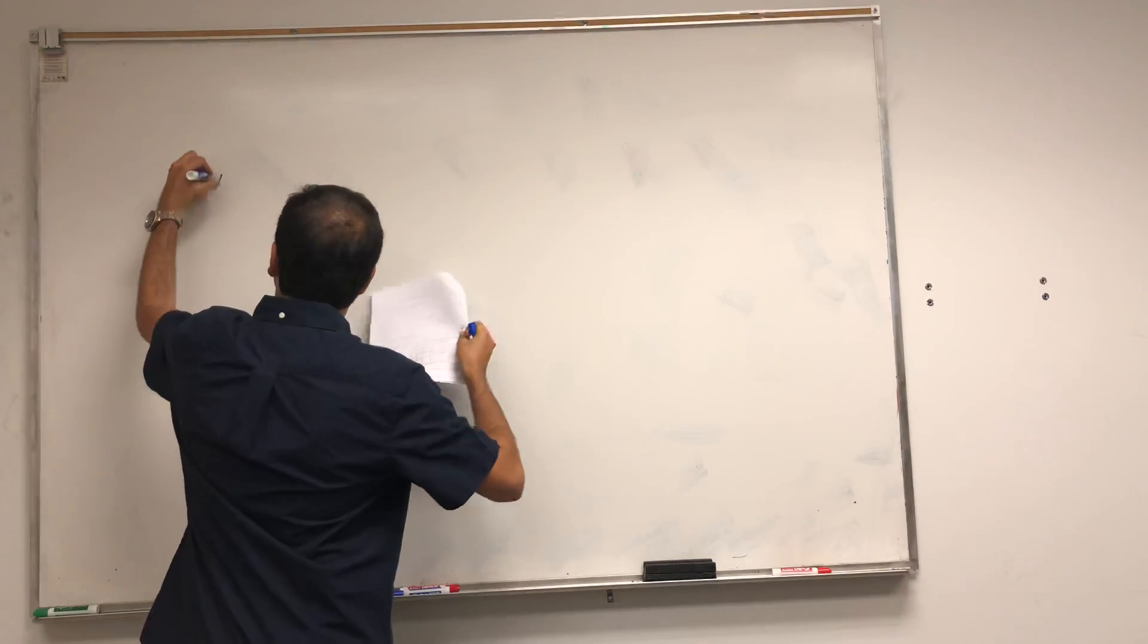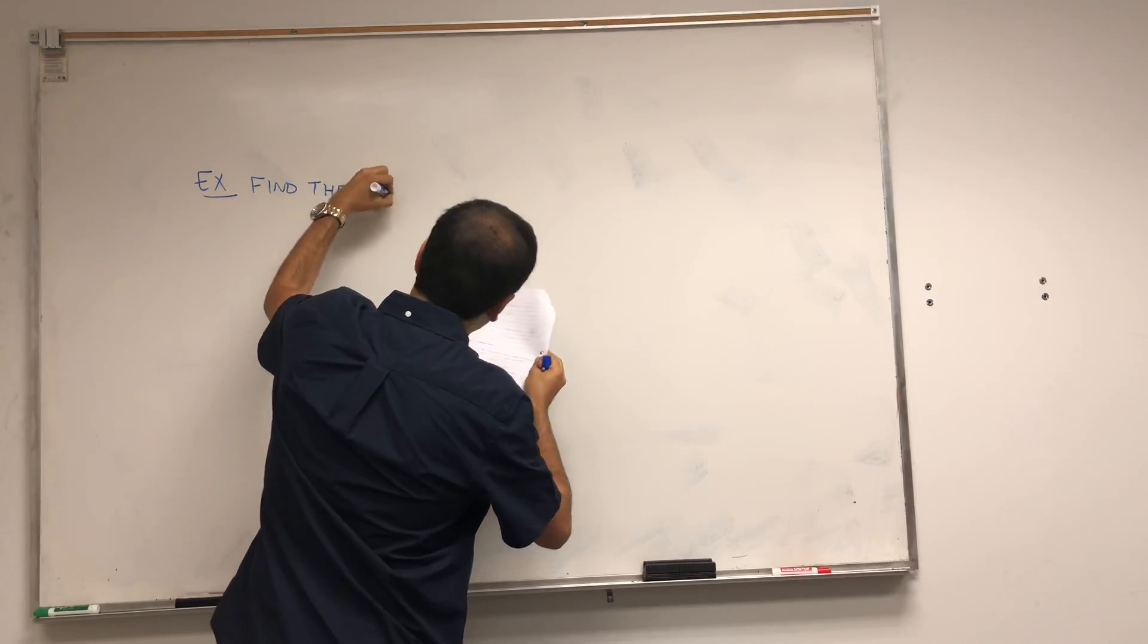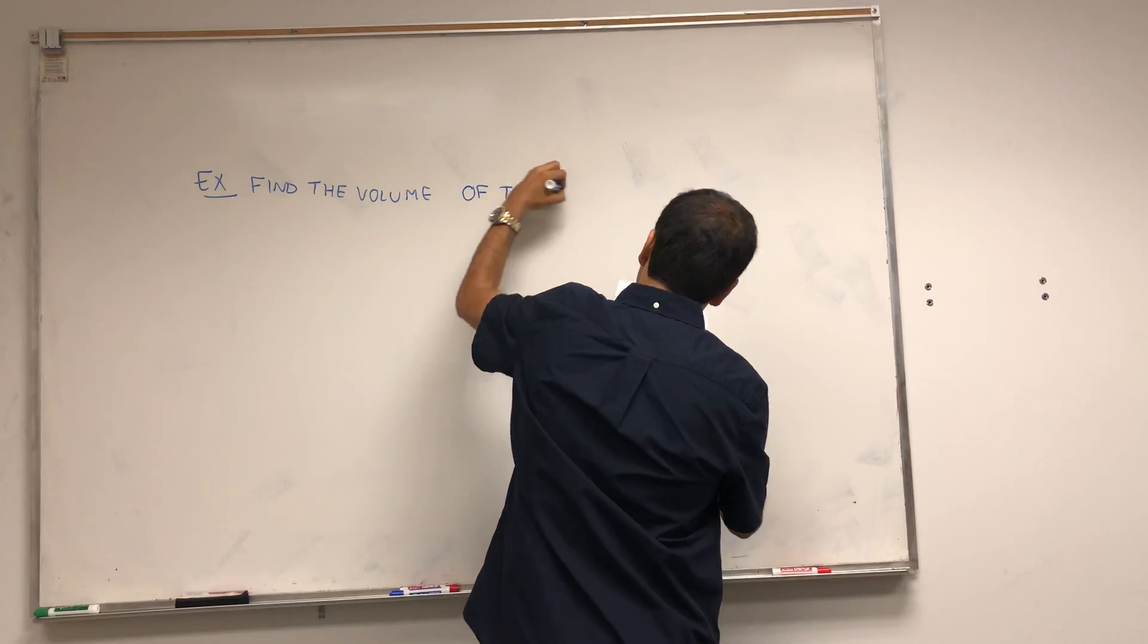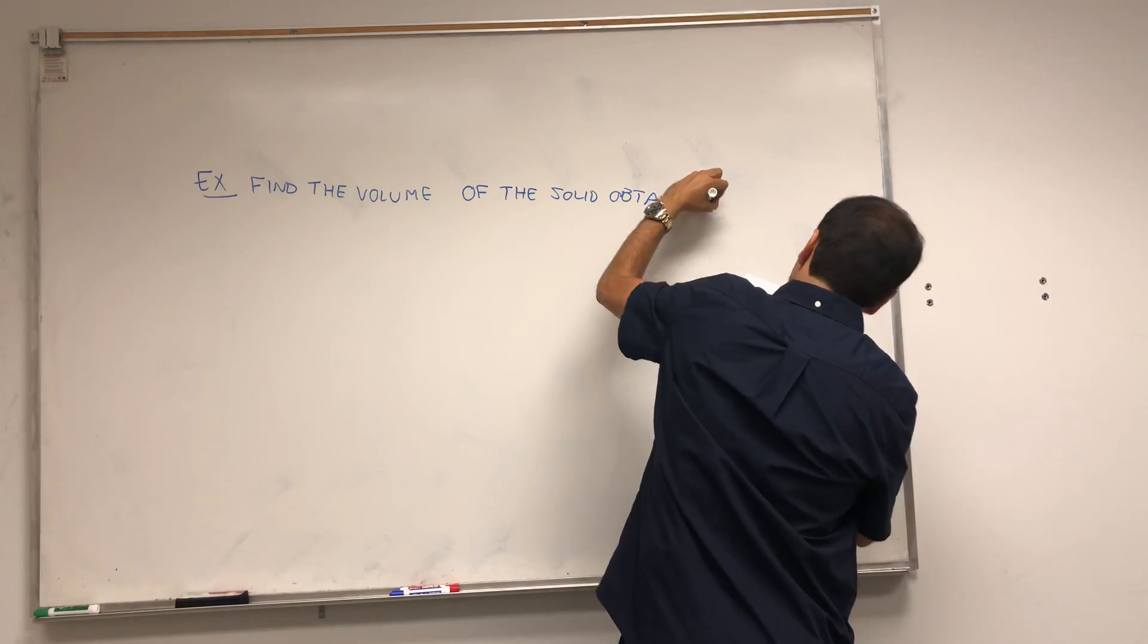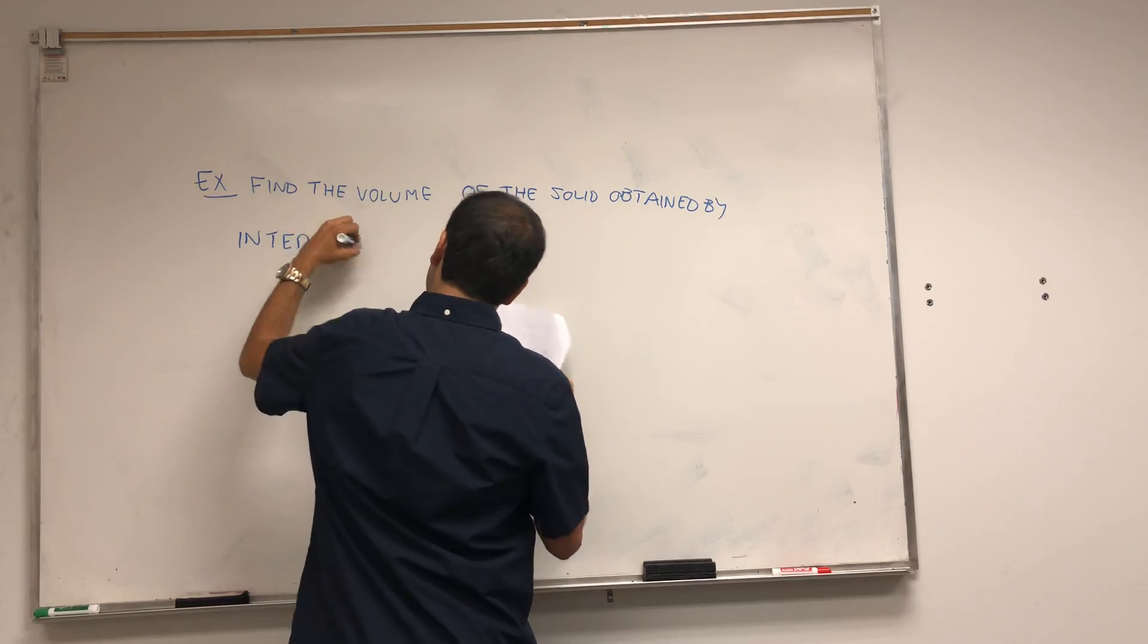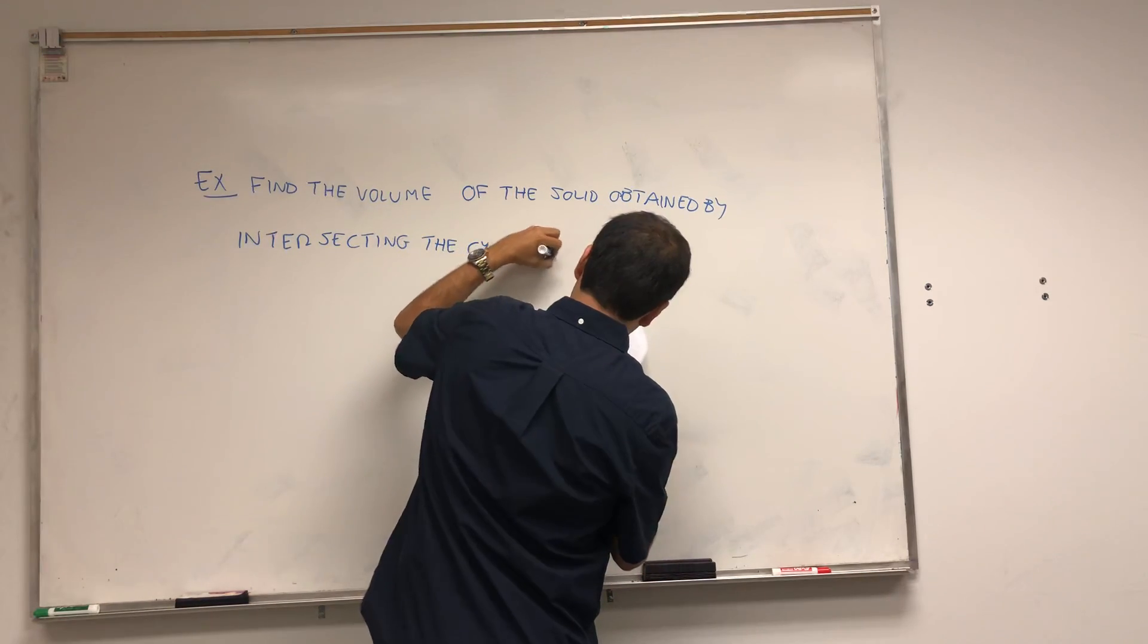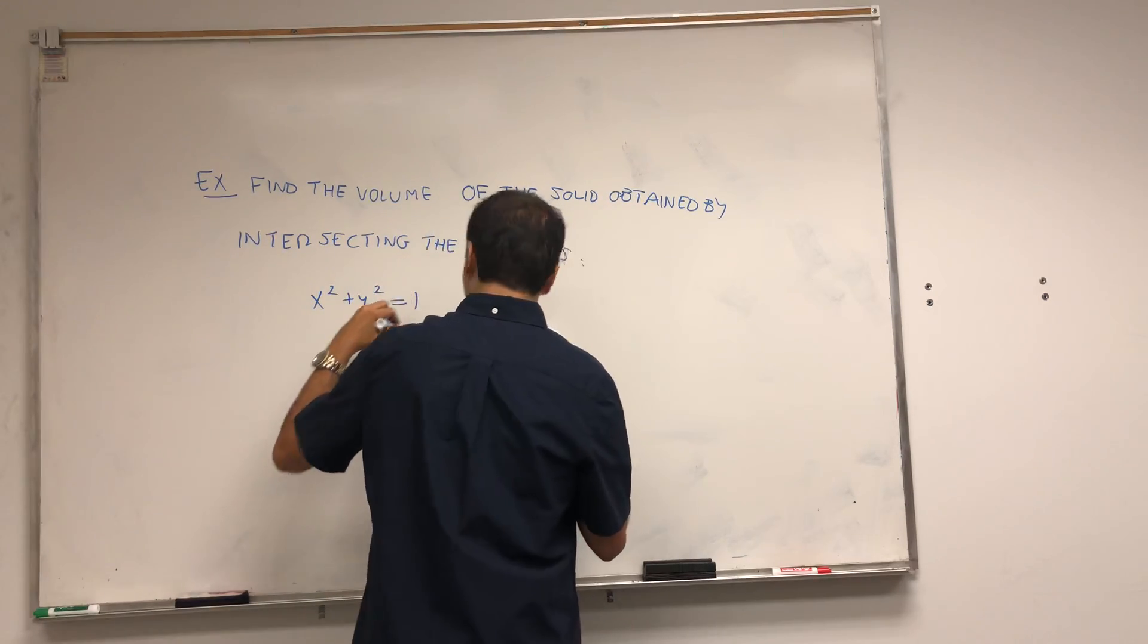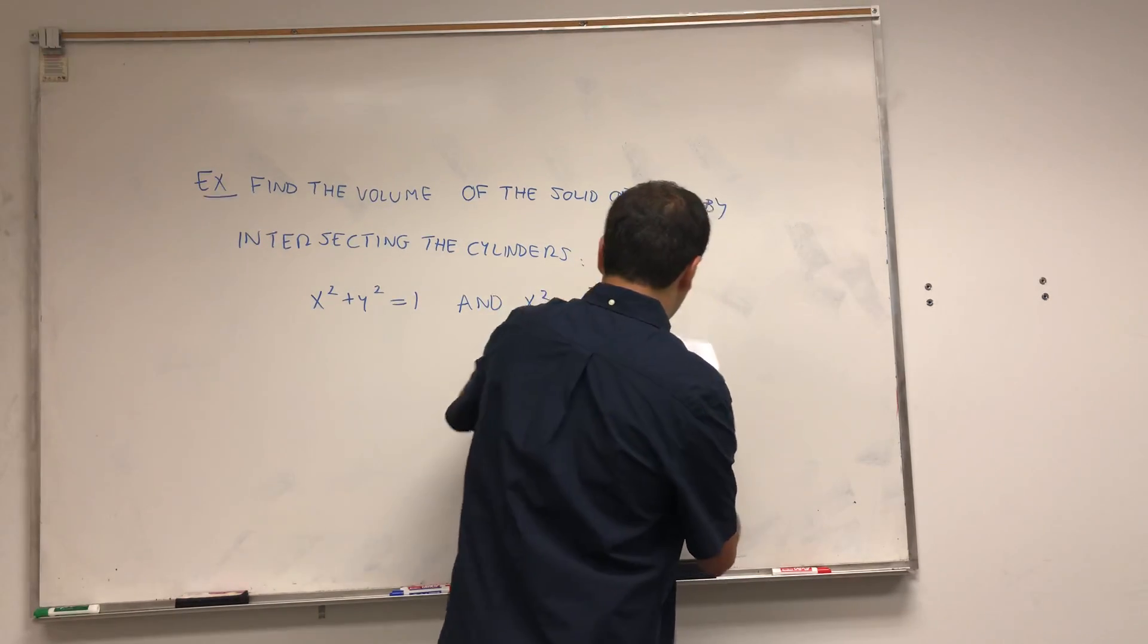So let's do it. Find the volume of the solid obtained by intersecting the cylinders x squared plus y squared equals 1 and x squared plus z squared equals 1.